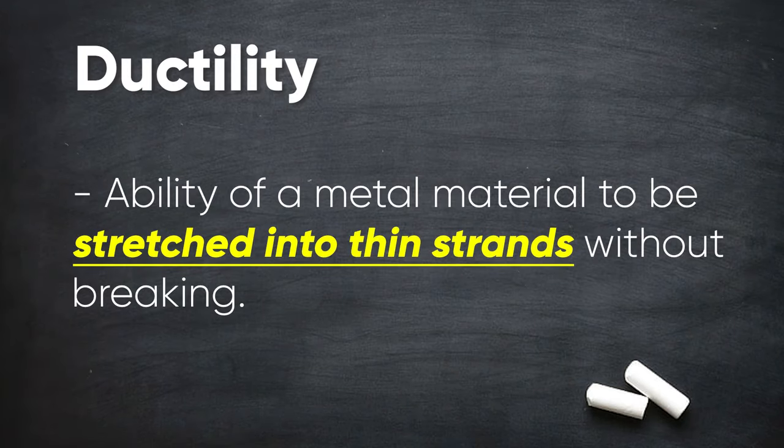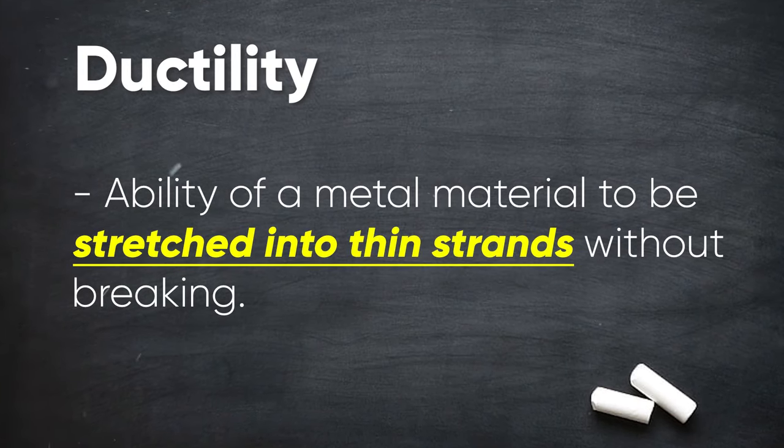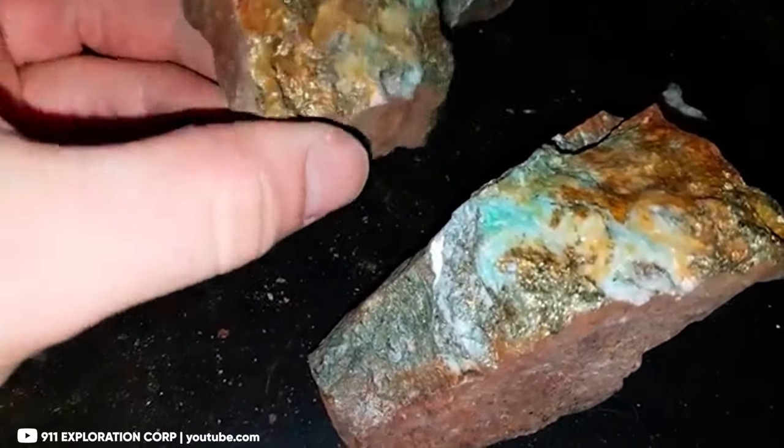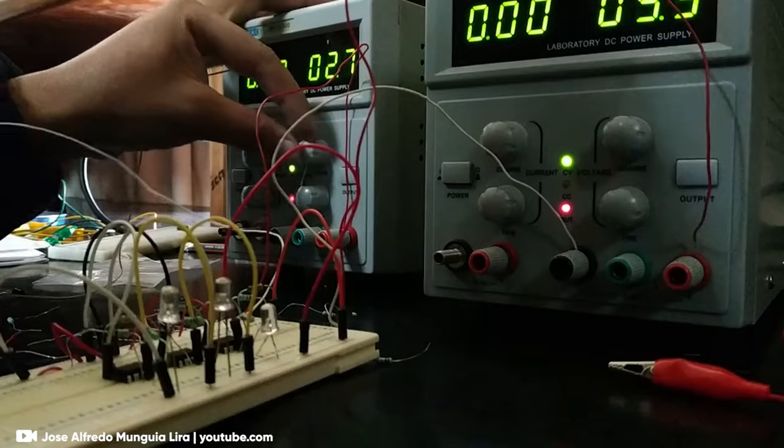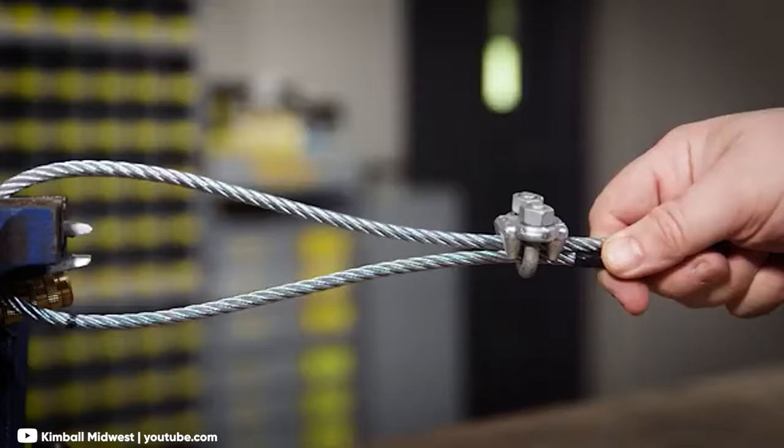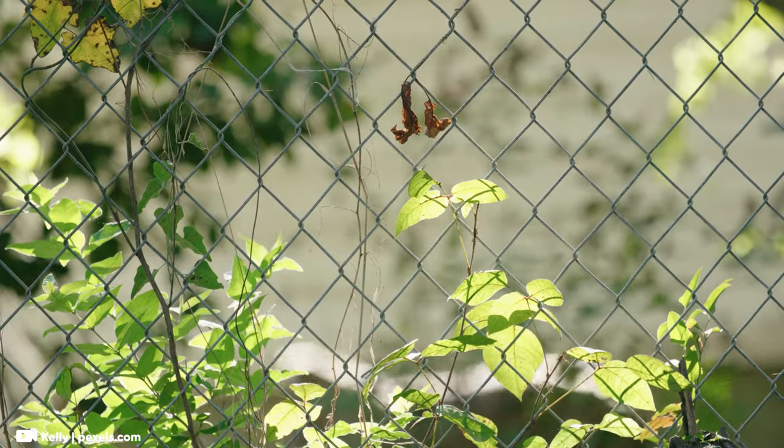Then we have ductility, which is the ability of a metal material to be stretched into a thin strand. This property is super important for materials like copper in making electrical wires because they can be stretched into long thin strands of wires. We use these wires for electrical wirings, wires we use for tying, cables, wire mesh, wire screens, and wire fences.